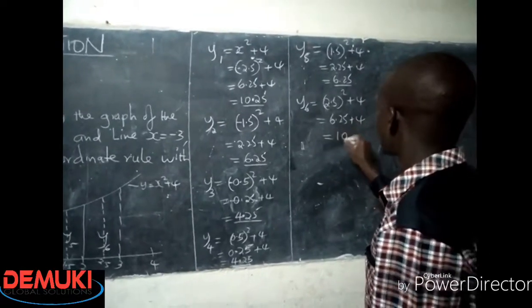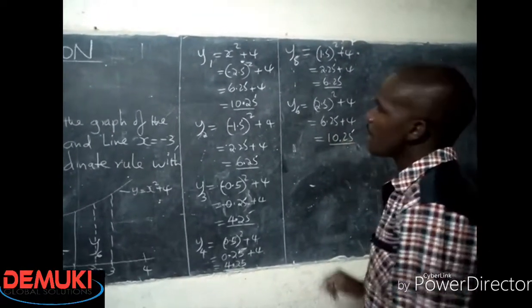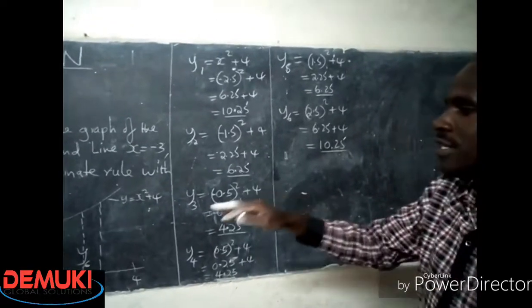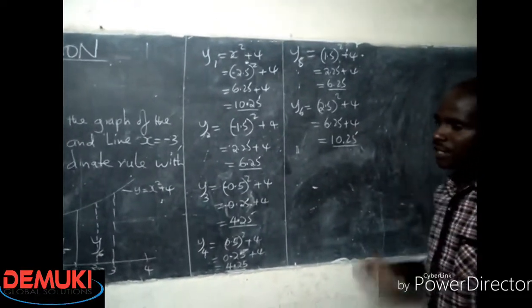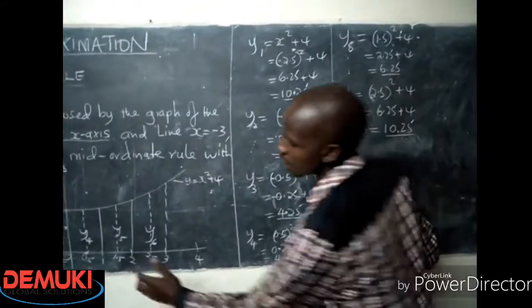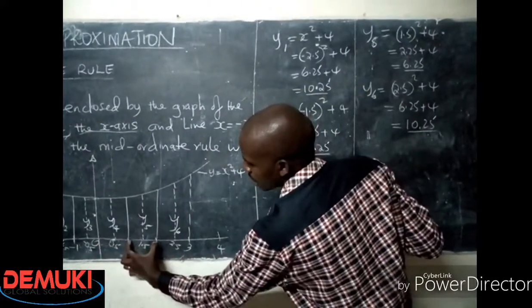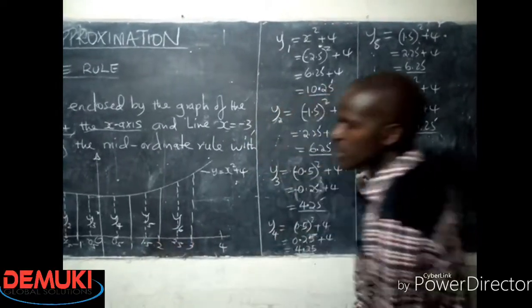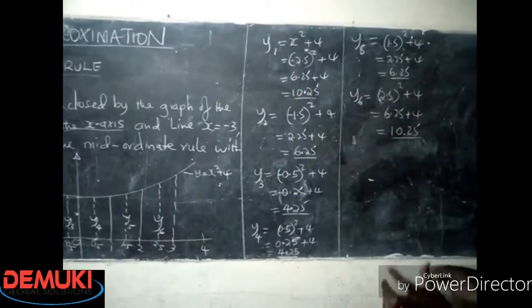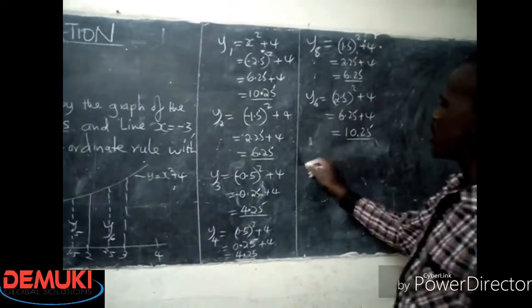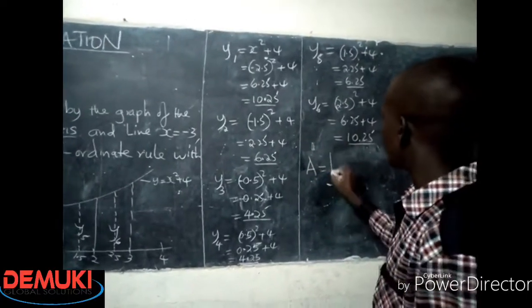And then we have y6. The corresponding value is 2.5 for x, so it's 2.5 squared plus 4. This becomes 6.25, this is 10.25. So now I have all the 6 ordinates, and then the width of each strip is 1. 0 to 1 is 1, 1 to 2 is 1, 2 to 3 is 1, so the width of all the strips is 1.